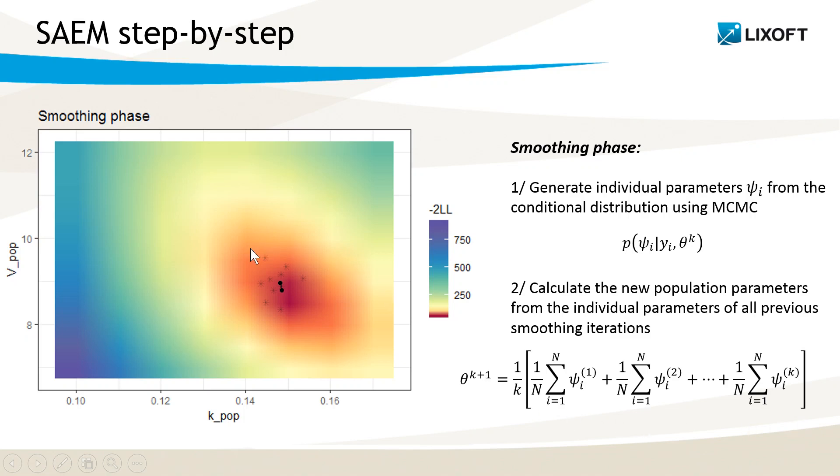For the first smoothing iteration, it's only those 10 points. Then for the next iteration, I generate 10 more points using the population parameters of iteration 1, and now average over those 20 individual parameter values to get the population parameters of iteration 2.